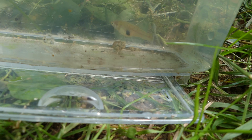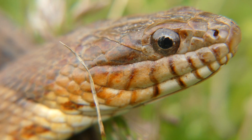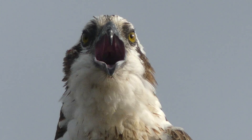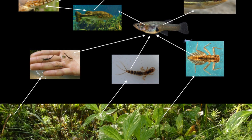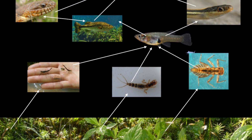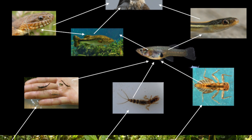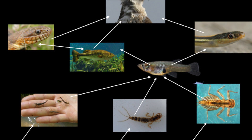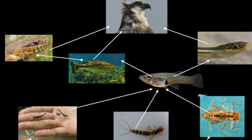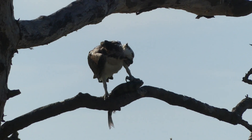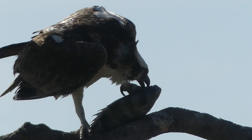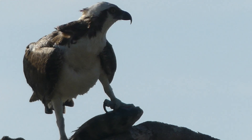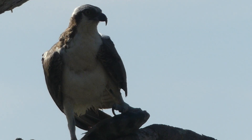We call the interactions between all the different organisms in an ecosystem a food web. A food web is like a map that shows how energy moves throughout the system. By following the arrows, we can see the direction of energy flow. Since ecosystems like rivers often have consumers with overlapping niches, these diagrams are useful in helping us visualize where each organism fits in and how it may be interacting with other ecological components.